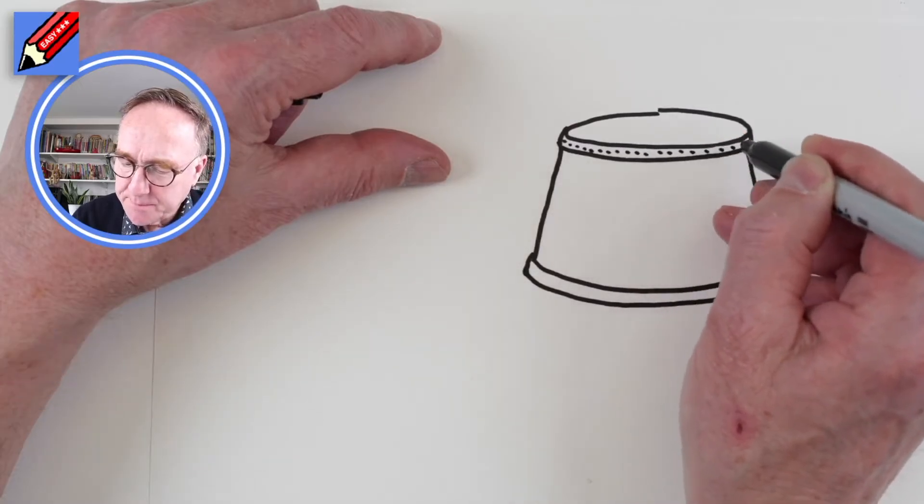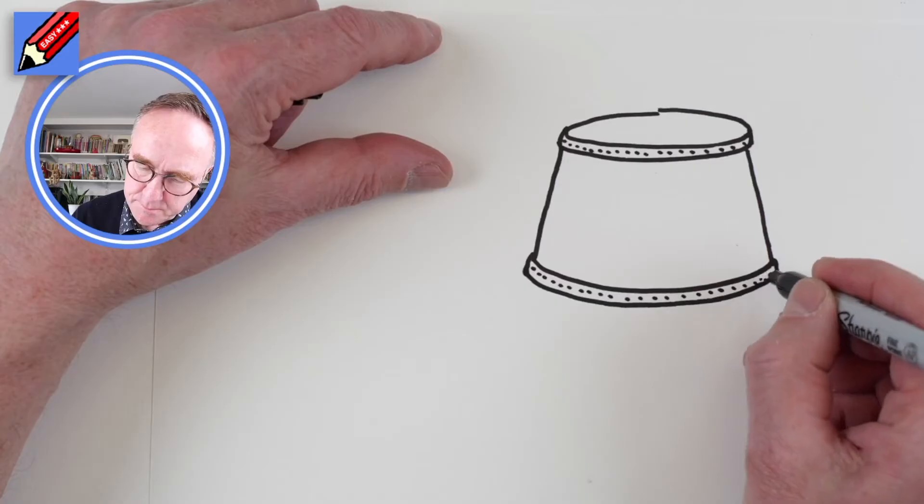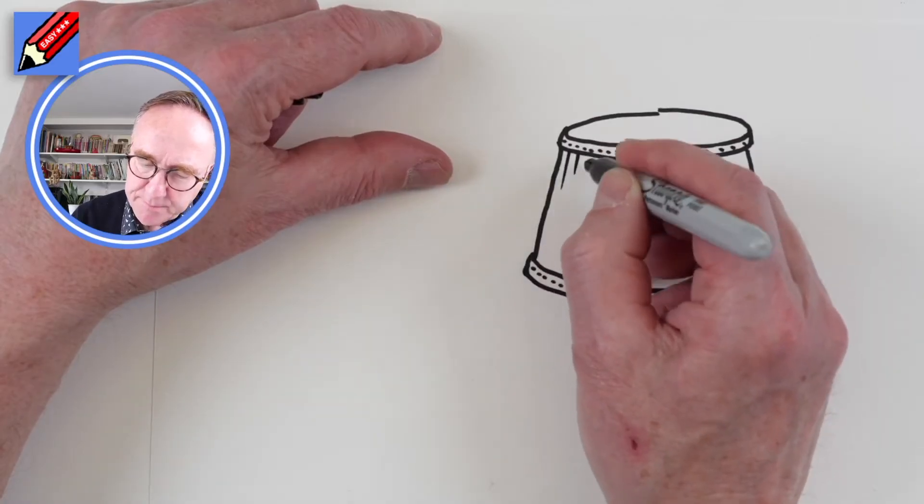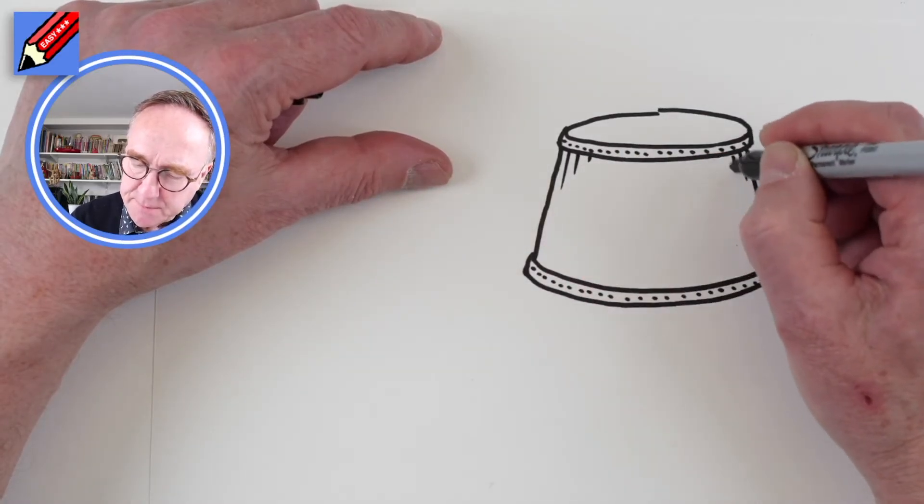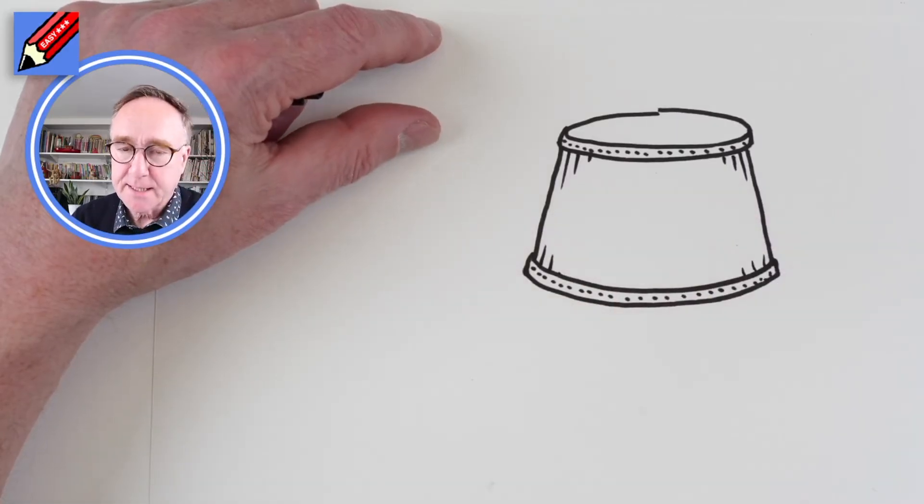We might put a little bit of pattern in there with some dots, and we might have it slightly pleated or something like that with some lines.